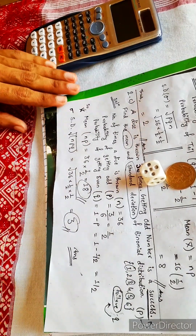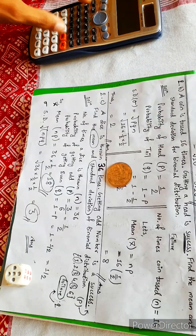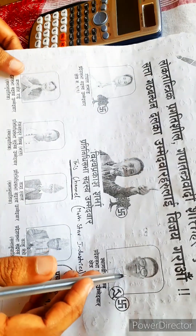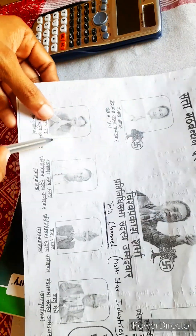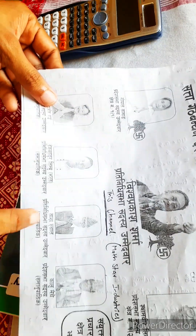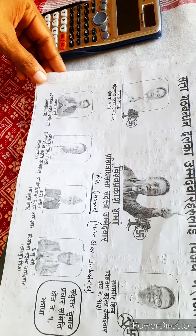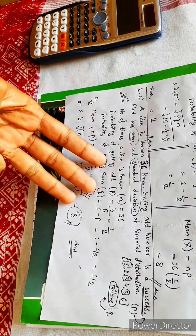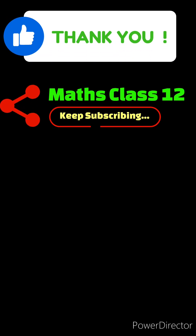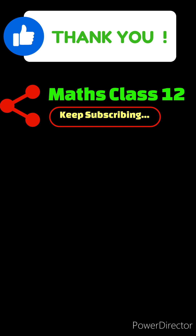Our answers are: mean is 18 and standard deviation is 3. Now let's do the next question. Let's start number 3.